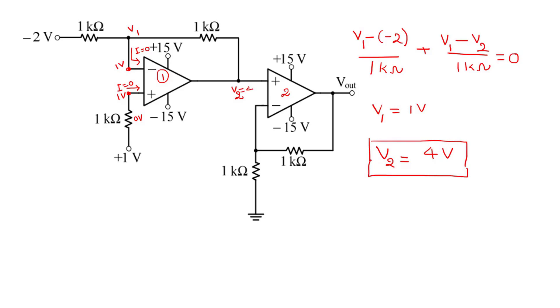That means here 4 volts appears. Again, this op-amp 2 is connected in inverting configuration. There is a virtual short between the non-inverting terminal and inverting terminal, so here also 4 volts appears.